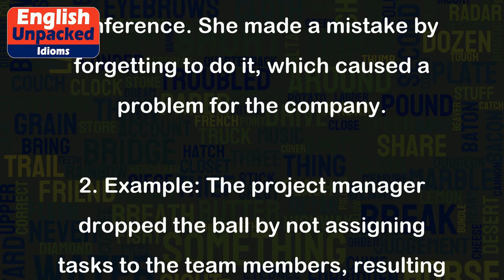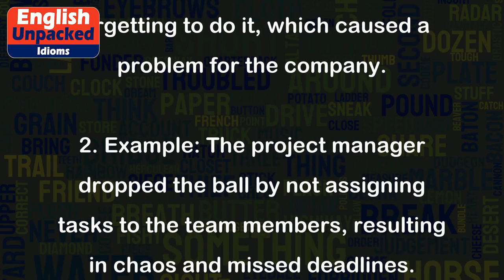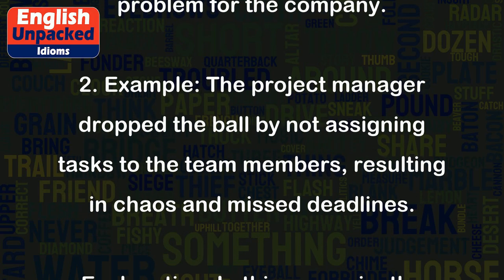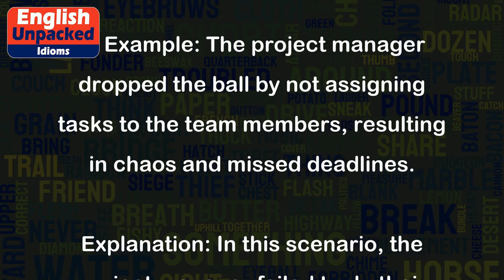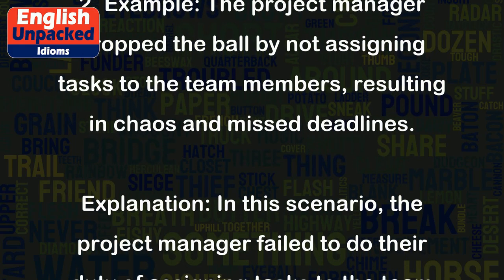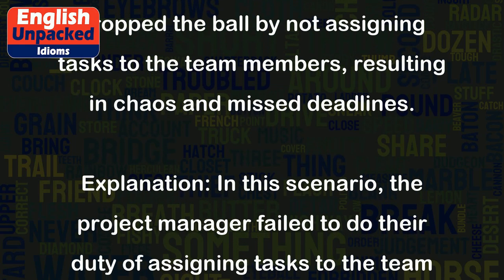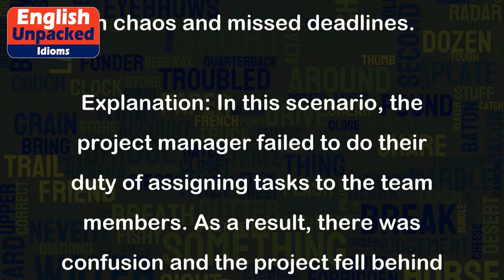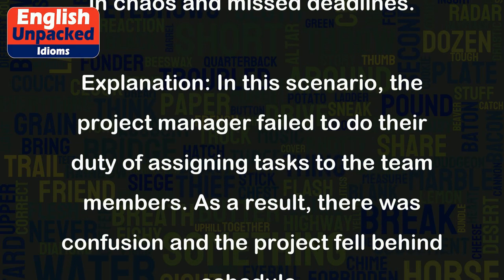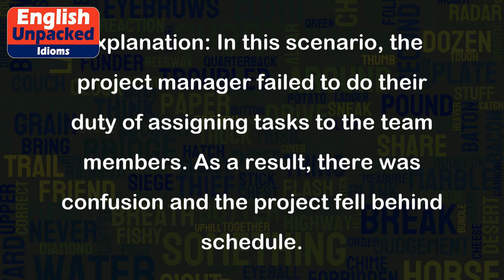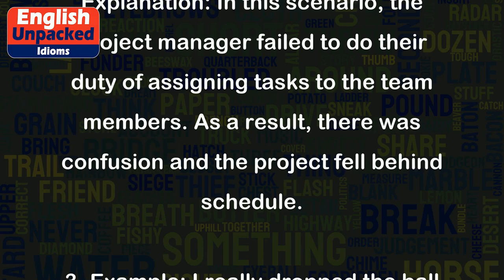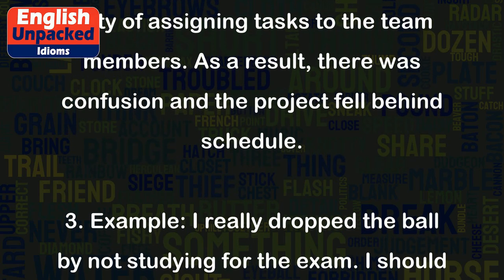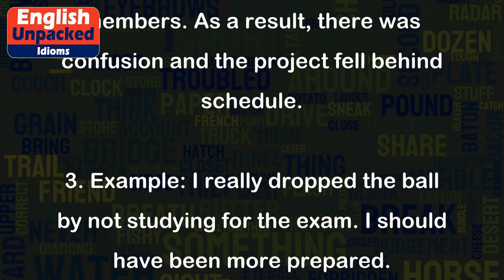Example 2: The project manager dropped the ball by not assigning tasks to the team members, resulting in chaos and missed deadlines. In this scenario, the project manager failed to do their duty of assigning tasks to the team members. As a result, there was confusion and the project fell behind schedule.